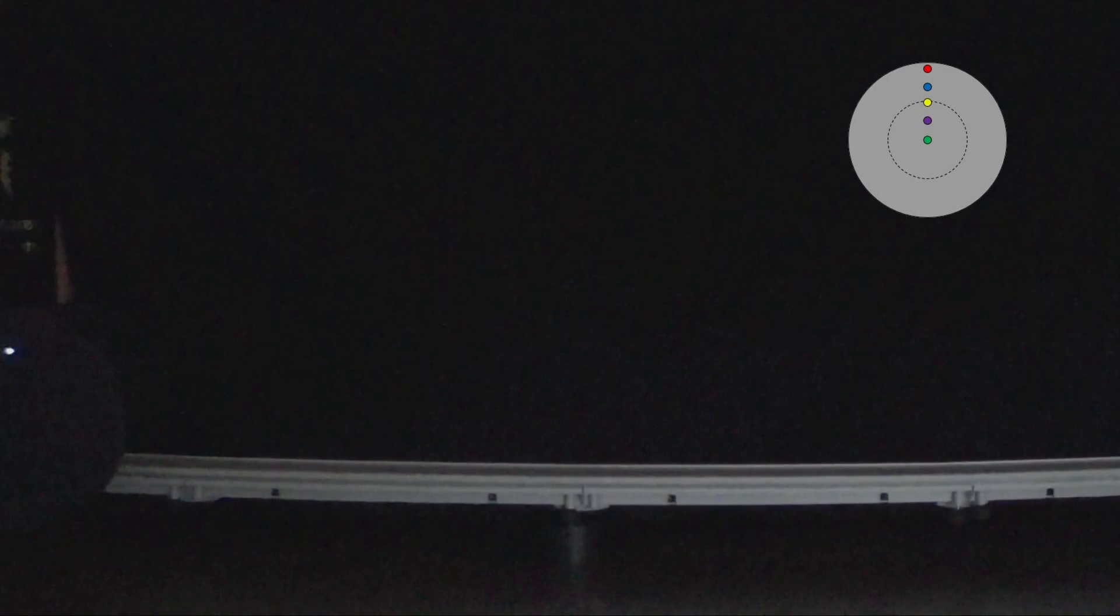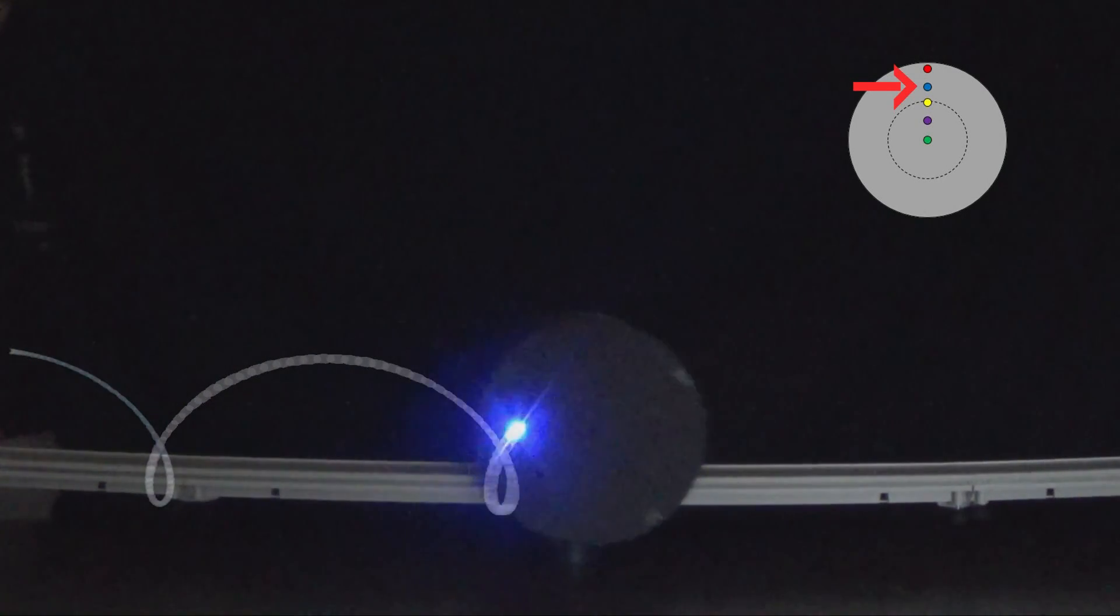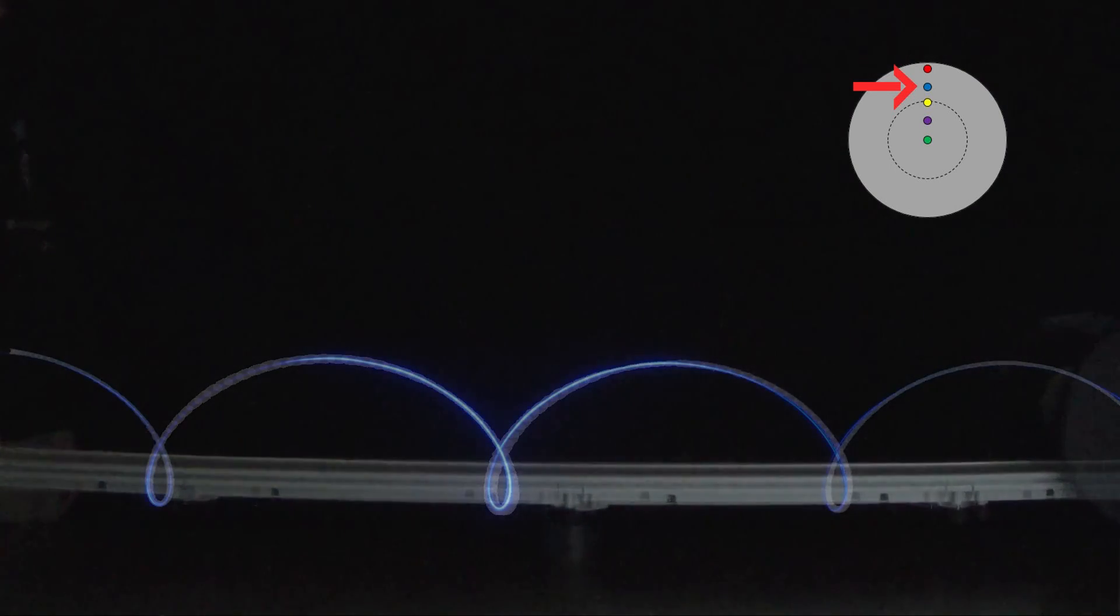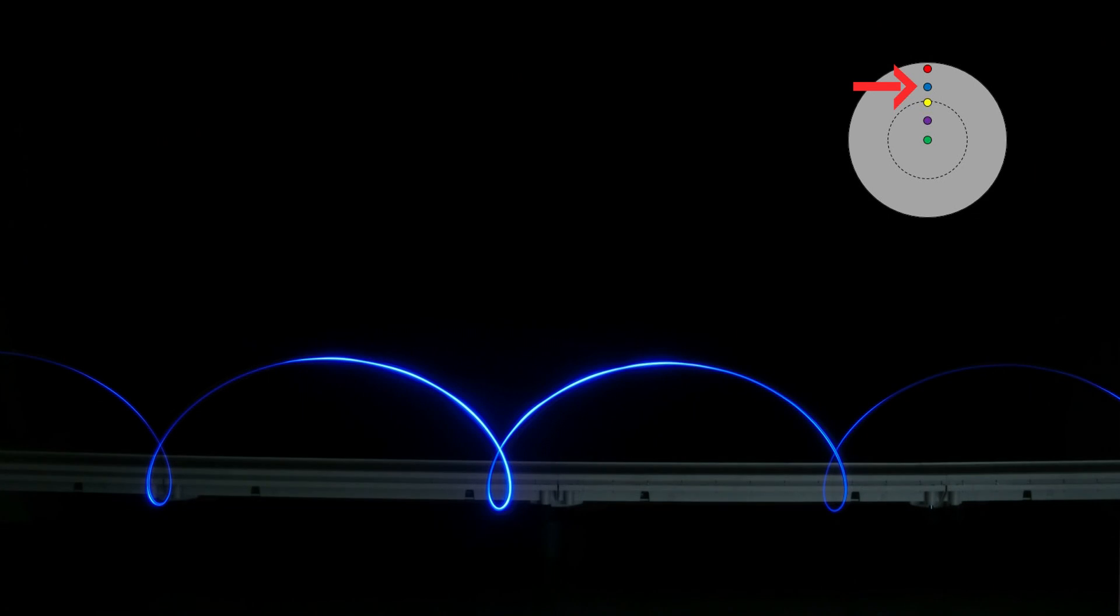The next two curves will be prolate cycloids. Prolate cycloids form for any point outside the inner radius and will have similar characteristics. First is the blue LED. Notice that the path starts to curl back on itself.